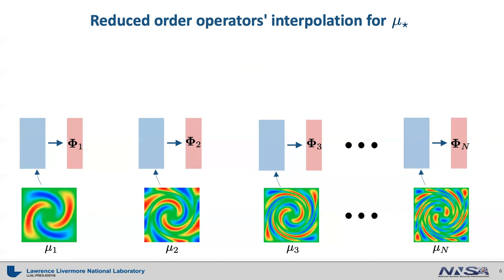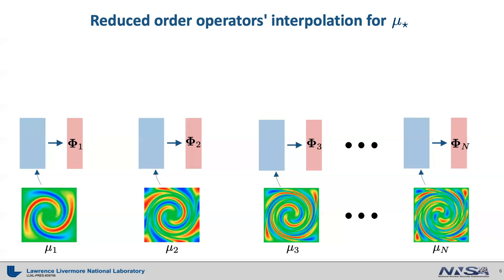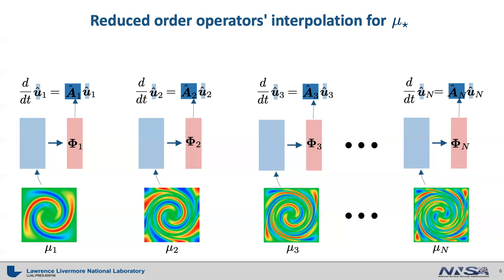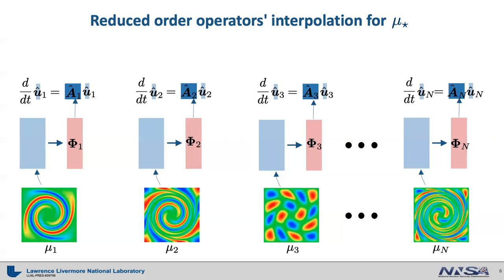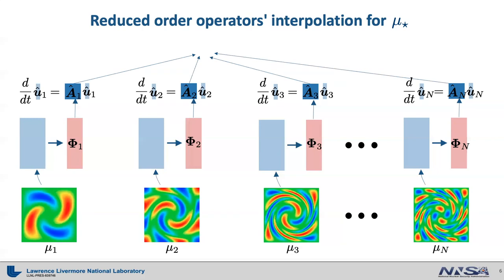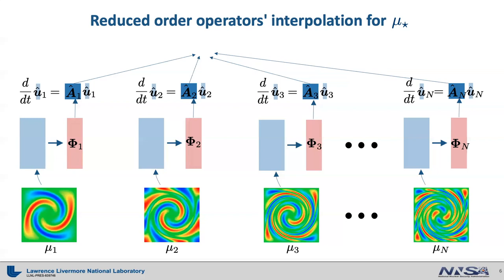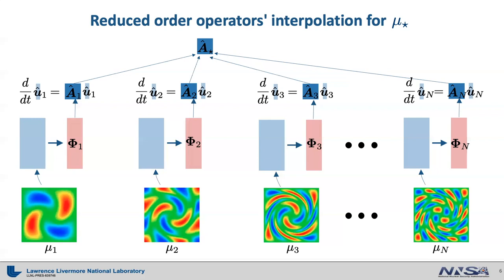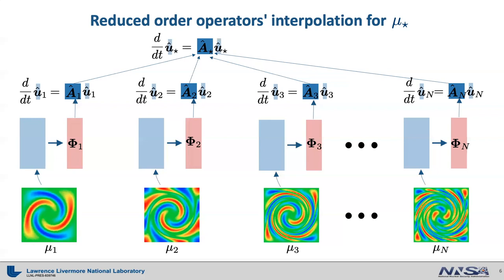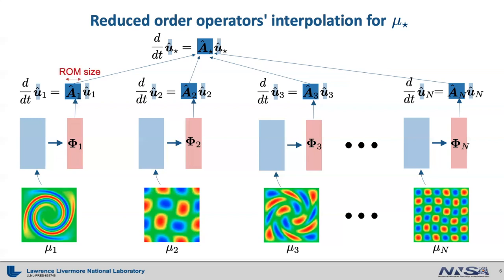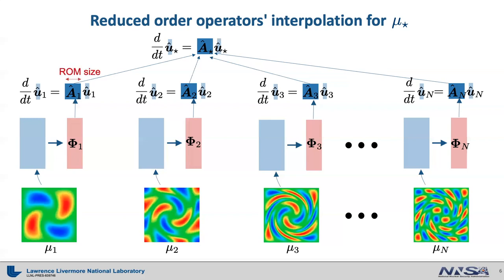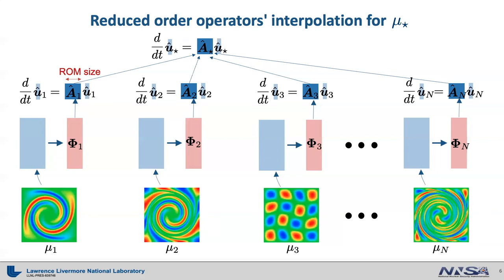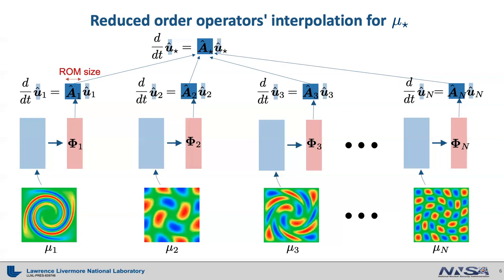An alternative approach is to interpolate reduced order operators. Assuming we have finished constructing local reduced order models for all training points, one can interpolate the reduced matrix operators A1 hat, A2 hat, and so on up to A sub n hat, to obtain an interpolated reduced matrix operator A sub star hat. An interpolated system of equations can then be solved. Each interpolation deals with smaller-sized matrices than the reduced bases, making this approach much more efficient than the reduced basis interpolation.